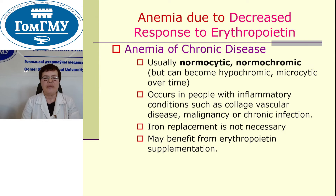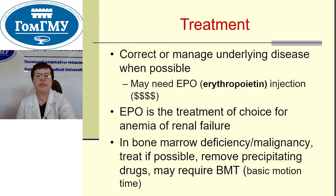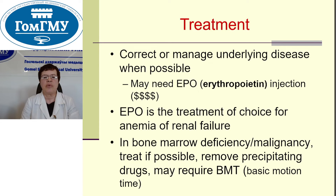Iron replacement is not necessary in anemia of chronic disease. Erythropoietin injections are the treatment of choice for anemia of renal failure. In bone marrow deficiency or malignancy, treat if possible, remove precipitating drugs, and may require transfusion.